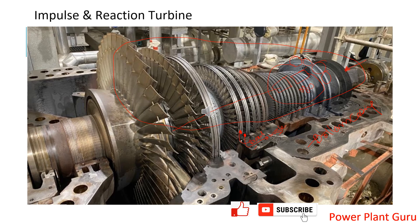Nozzles are fixed in the top and bottom casing while the buckets are mounted on the rotor. Steam flows from the high-pressure, high-temperature end initially — there is high energy in the steam, so smaller blades can extract that energy. As the steam pressure and temperature drop, the volume increases, and to extract the right amount of energy from the steam the surface area of the blades has to increase.